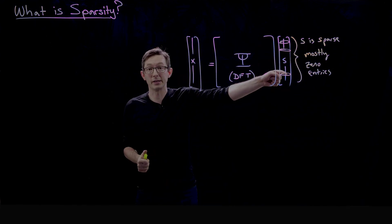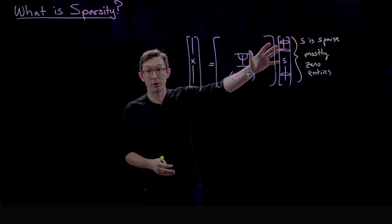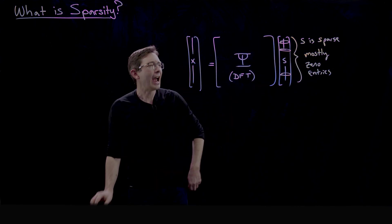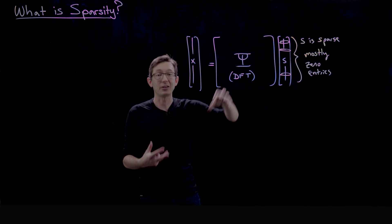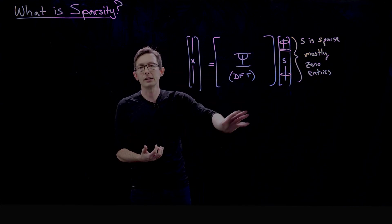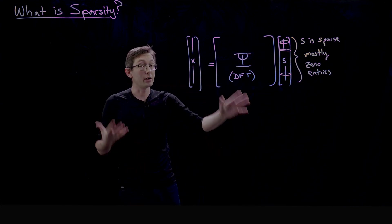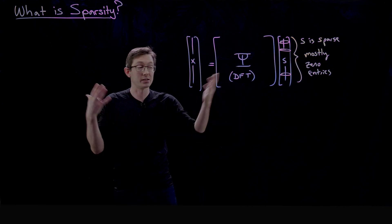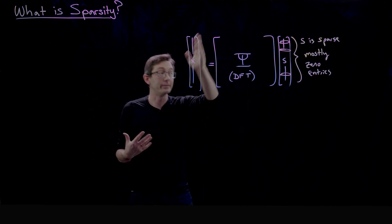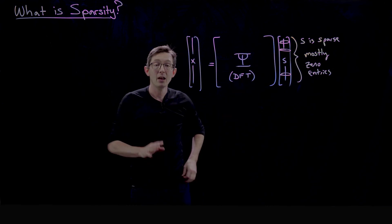There's only a few non-zero entries of s in this Fourier transformed domain. And this basis ψ doesn't have to be a Fourier transform—it could be a wavelet transform or some other transformation that you cook up where you can efficiently represent your data.